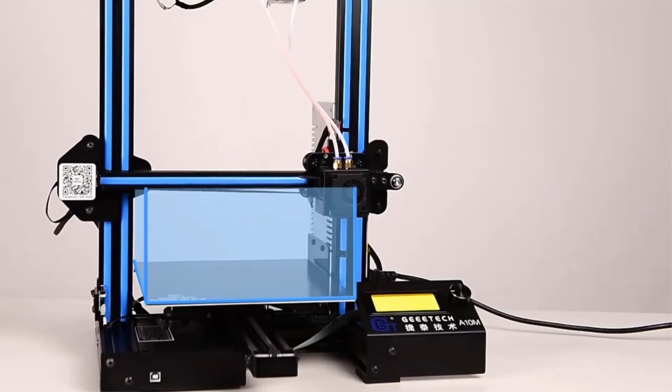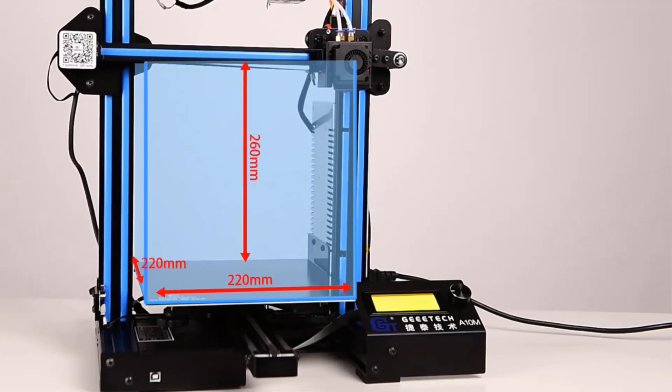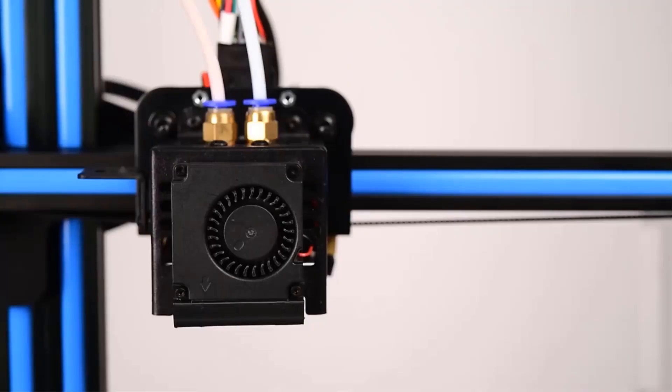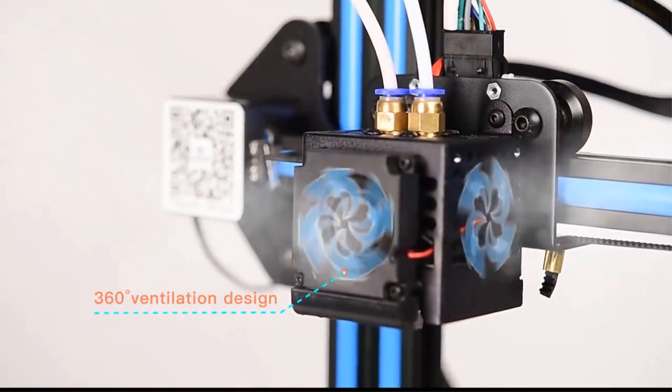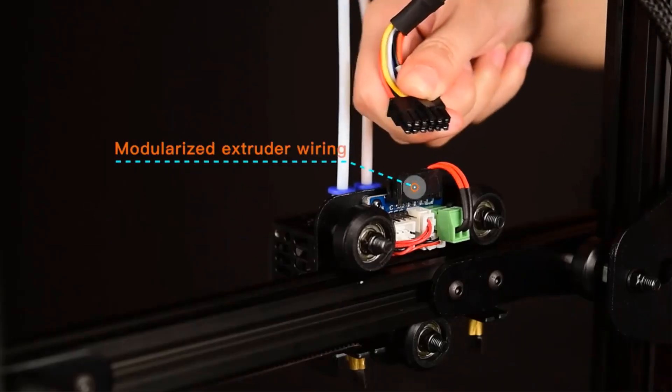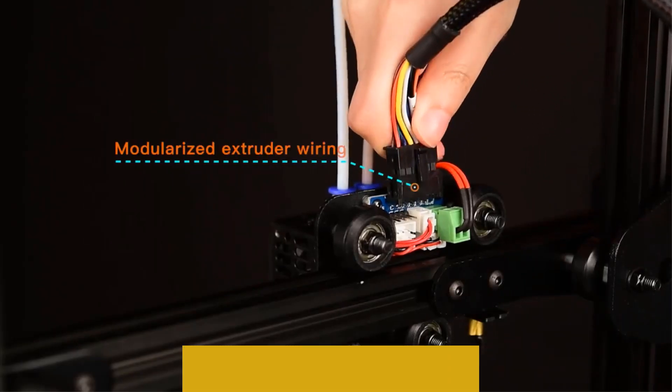The series includes A10M, A20M, A10T, A30T, and Miser M 3D printers. While they use the same modular design and the FFF printing technology, each model has unique specifications for different use.